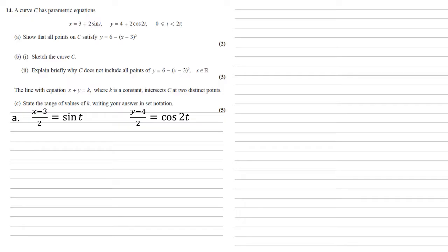Now these two trigonometric functions are linked by the formula cos 2t equals 1 minus 2 sin squared t. So we can replace our cos and sine with our equations. So y minus 4 over 2 is equal to 1 minus 2 lots of the square of x minus 3 over 2. Bringing the square into the brackets gives us x minus 3 squared over 4.